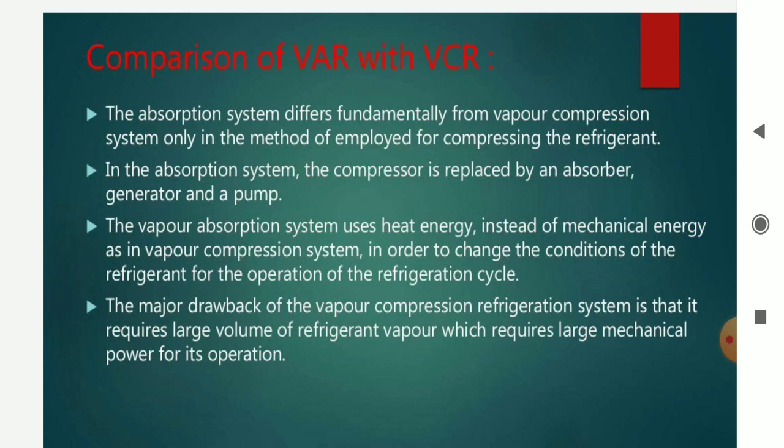The Vapor Absorption System uses heat energy, whereas mechanical energy is used in the Vapor Compression Refrigeration system to change the conditions of the refrigerant for operation of the cycle. The major drawback of the Vapor Compression Refrigeration System is that it requires a large volume of refrigerant vapor, which requires large mechanical power for its operation.